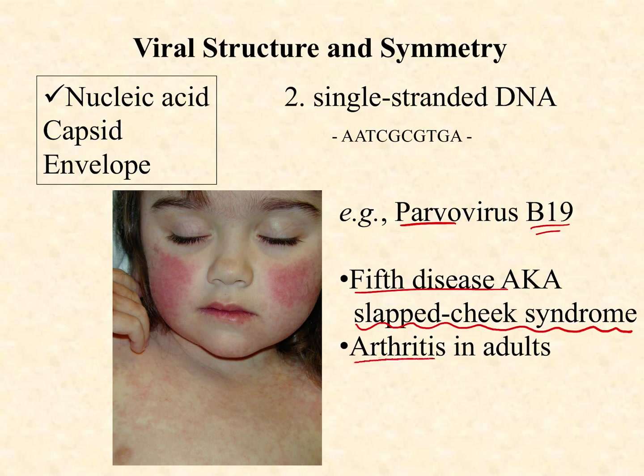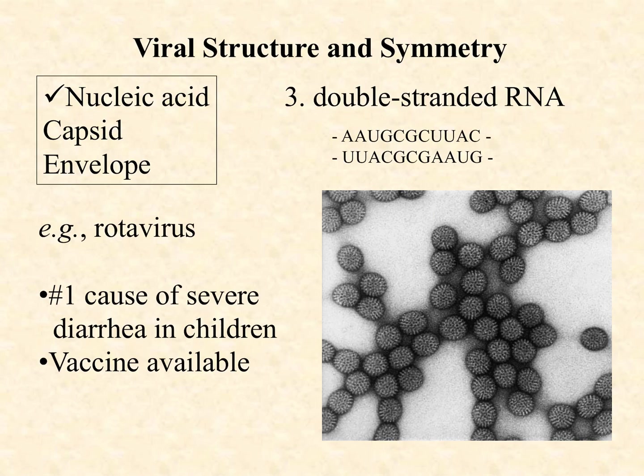In adulthood, complications are much more common — similar to what we saw with chickenpox. Specifically in adults, parvo infections can cause arthritis if that adult was never exposed as a child. The good news is the vast majority of us were exposed as kids. Very few people reach adulthood having never had a parvovirus B19 infection, and it rarely would have been diagnosed — just a little rash, a little fever, you stayed home from school a couple of days and then got on with life. So parvo B19 is a single-stranded DNA virus.